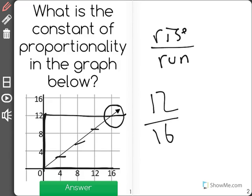So 12 over 16 is the constant of proportionality. When we simplify this, it's 3 fourths.